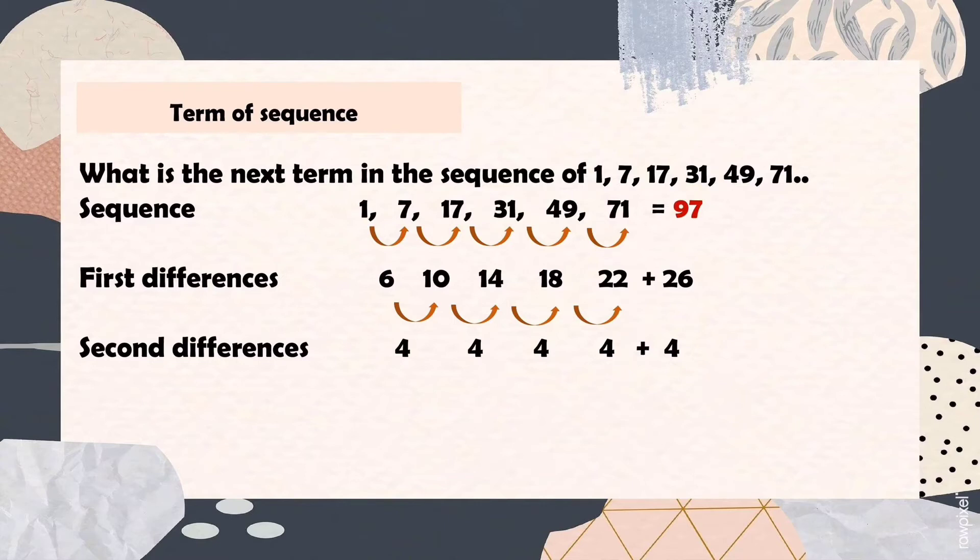So we are going to add the second difference to the first difference, which is 4 plus 22, so that equals 26. So we can now add upward.